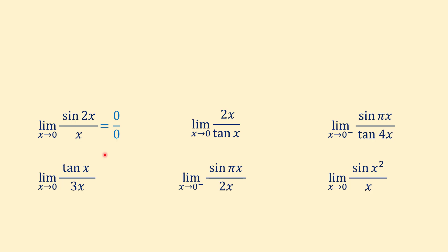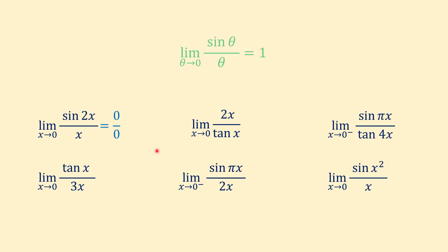A typical method for finding limits like this is using this property: the limit of sine of theta over theta as theta approaches 0 equals 1. But the main problem with applying this property is that sometimes we have to do a lot of algebraic manipulations to convert these limits to this one.